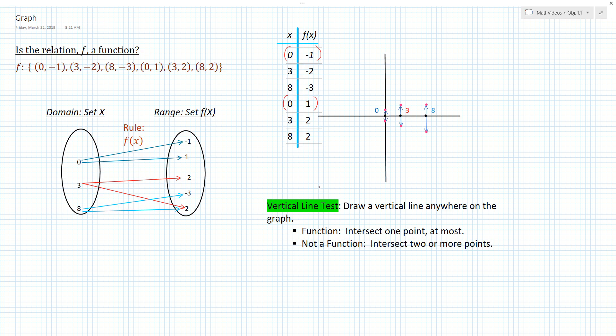And what the vertical line test says is that you should take your graph and draw a vertical line anywhere on that graph. So anywhere you want to draw a vertical line, you draw a vertical line. So if I draw a vertical line here,